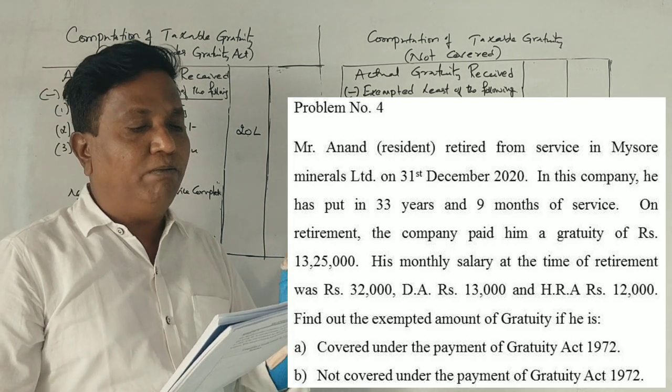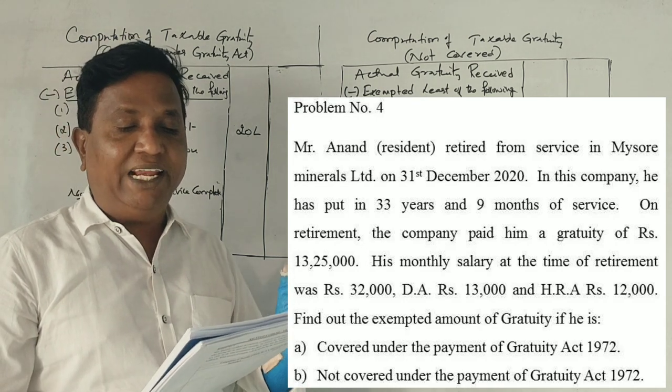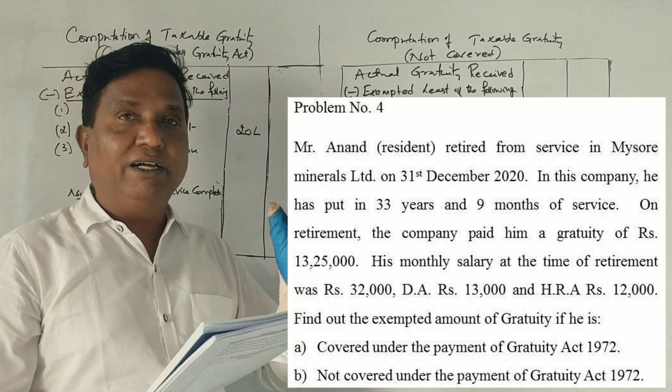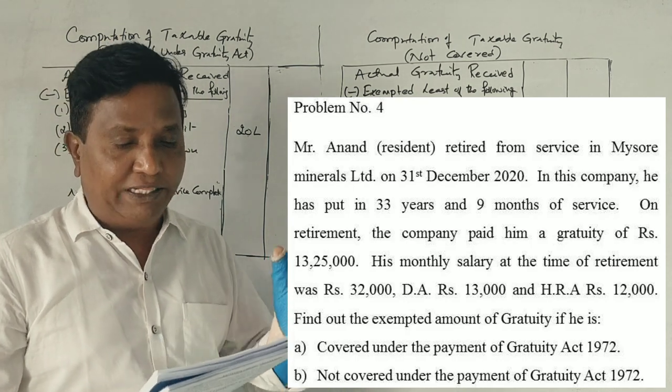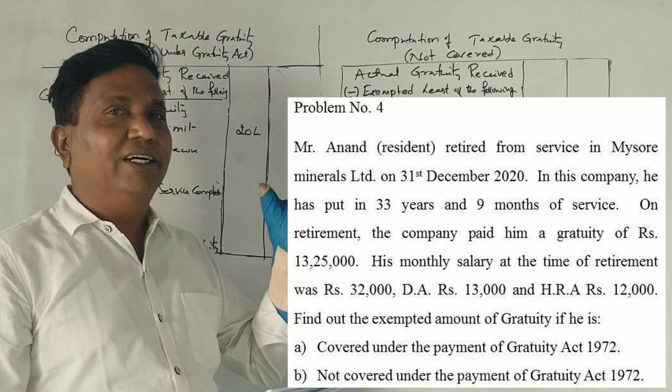On retirement, the company paid him a gratuity of 13,25,000. His monthly salary at the time of retirement was 32,000, DA 13,000, HRA 12,000. Now, find out the exempted amount of gratuity.